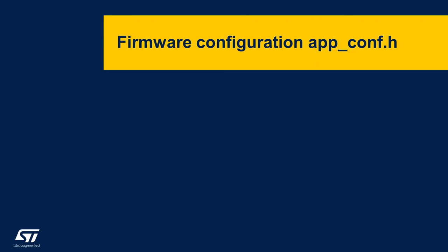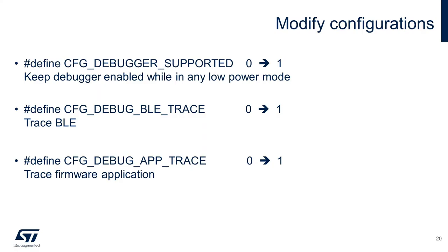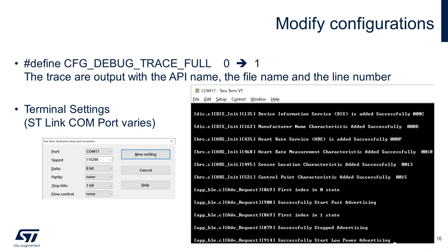The STM32WB package provides various configuration options, and the user can edit these by changing the values in the app config file. This is similar to turning on or off a switch — the user can set the preprocessor to 0 or 1 to enable or disable certain features. Let's enable the debugger and read the traces by setting these preprocessors to 1. Also, let's use the full trace option to see the message, the API name, the file name, and the line numbers. With this setting, you can see certain messages printed from TeraTerm terminal, telling you what is going on.